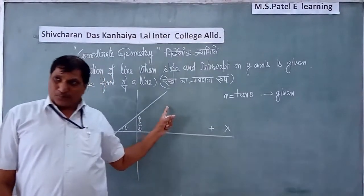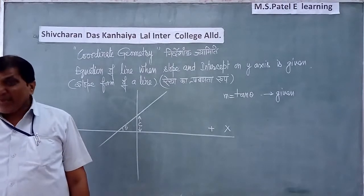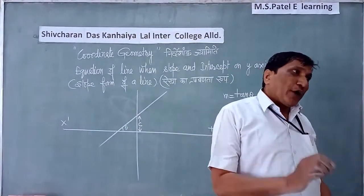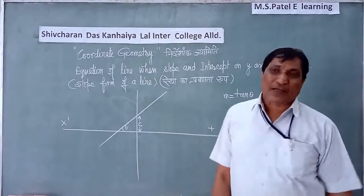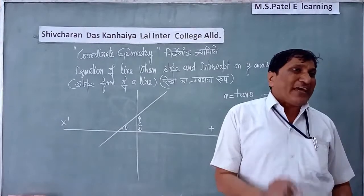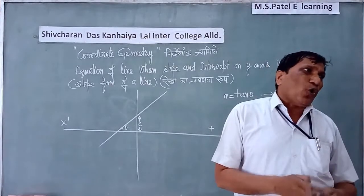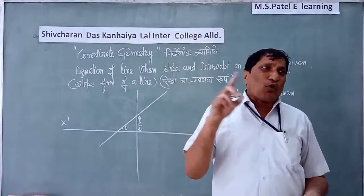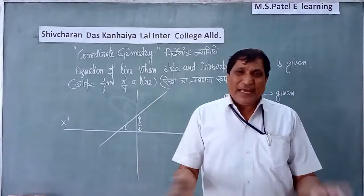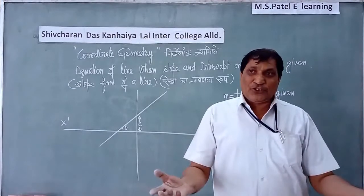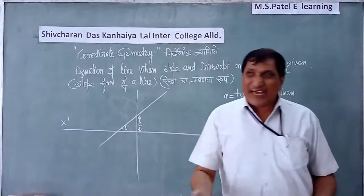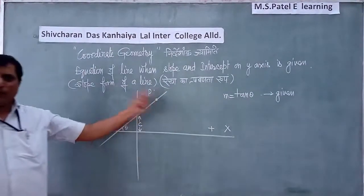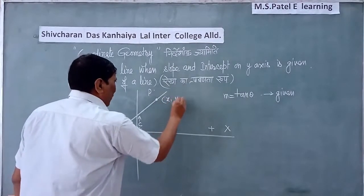For finding the locus of a point, we have to take a variable point on this line. That variable point is always taken in the form (x, y). We take a point with coordinates alpha, beta, and later replace alpha with x and beta with y. So suppose the coordinates of this variable point are x1.